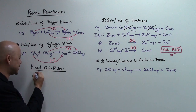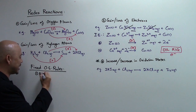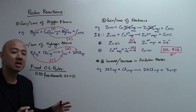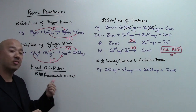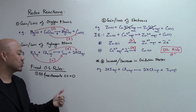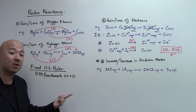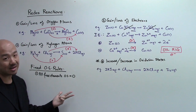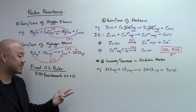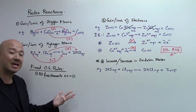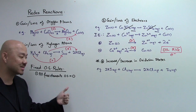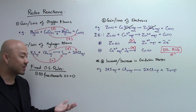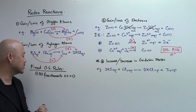Fixed oxidation state rule number one: all free elements have an oxidation state equal to zero. These include all metals in the periodic table, your group seven halogens like chlorine and fluorine as diatomic molecules, your group zero or group eight noble gases like argon, xenon, and krypton, and elemental gases like hydrogen gas, oxygen gas, and nitrogen gas. Some non-metals like carbon and sulfur also have an oxidation state of zero. These are known as your free elements.